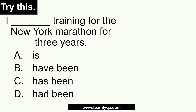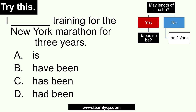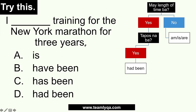First example: I blank training for the New York Marathon for three years. First question: is there a length of time in the sentence? Yes — for three years. If there were no length of time, you'd fall to is or are. Since there is a length of time, next question: is the action done? There's no indication that the training ended, so you can assume it's still ongoing up to now. The training hasn't finished.